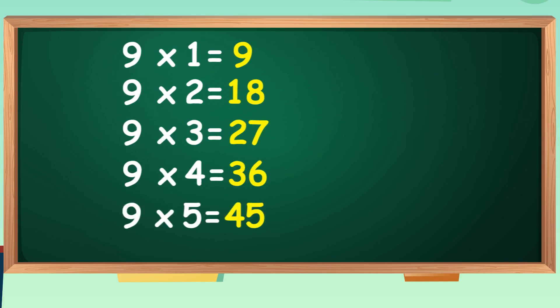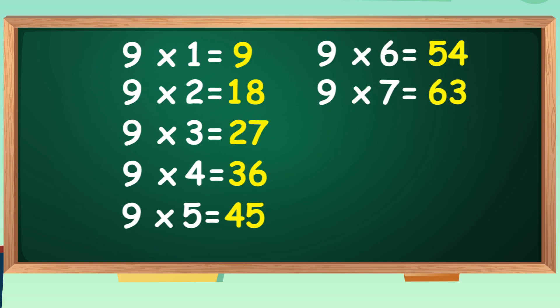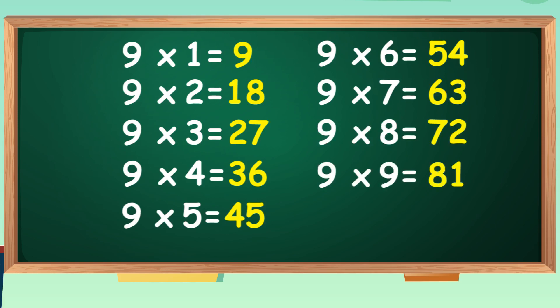Nine fives are forty-five. Nine fives are forty-five. Nine sixes are fifty-four. Nine sixes are fifty-four. Nine sevens are sixty-three. Nine sevens are sixty-three. Nine eights are seventy-two. Nine eights are seventy-two. Nine nines are eighty-one. Nine nines are eighty-one. Nine tens are ninety. Nine tens are ninety.